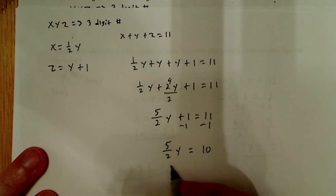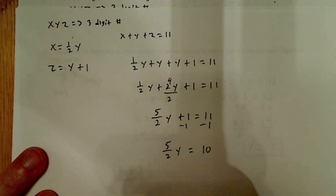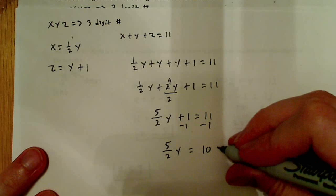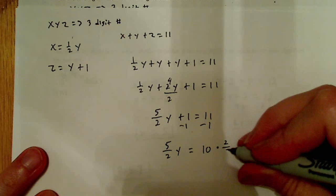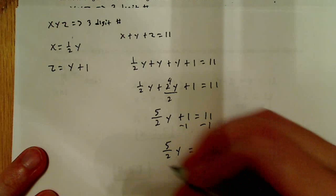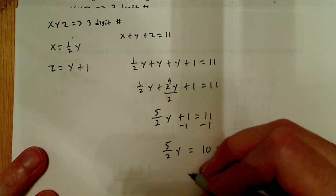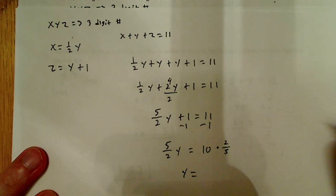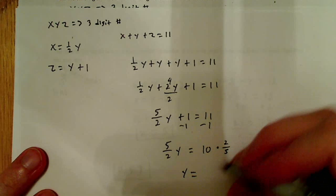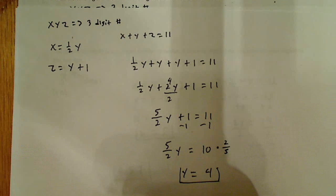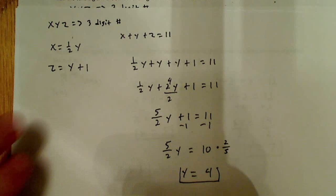Now I'm going to divide both sides by 5 over 2, which is the same thing as multiplying by 2 over 5. So I get y is equal to 10 times 2, which is 20, divided by 5, which is 4. So y is equal to 4.